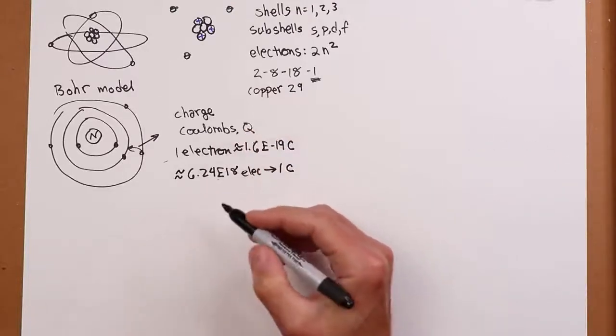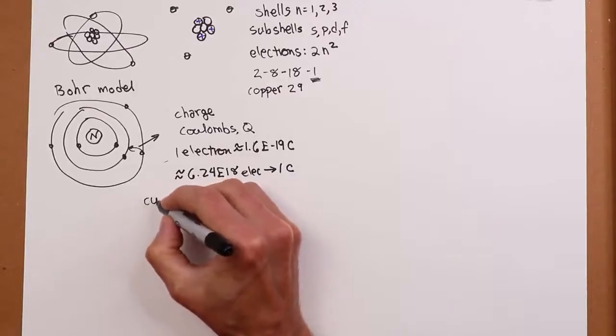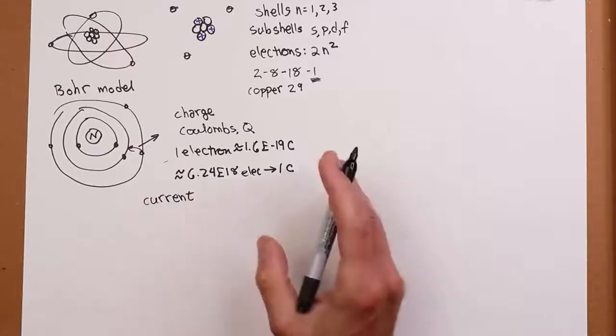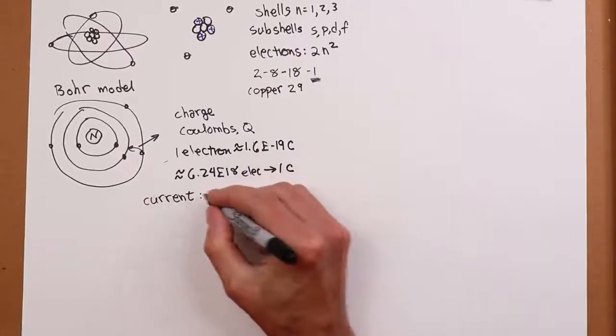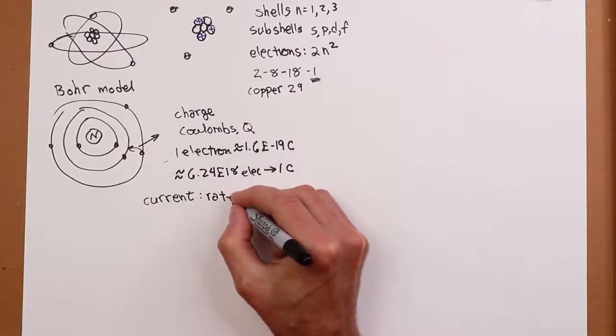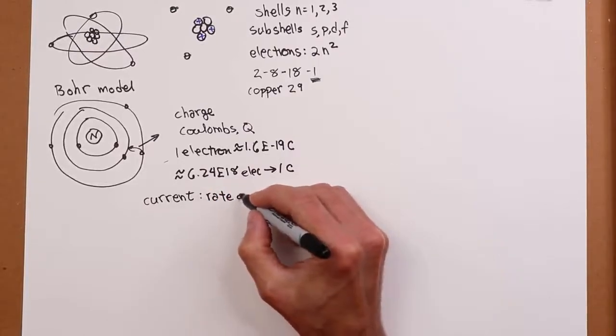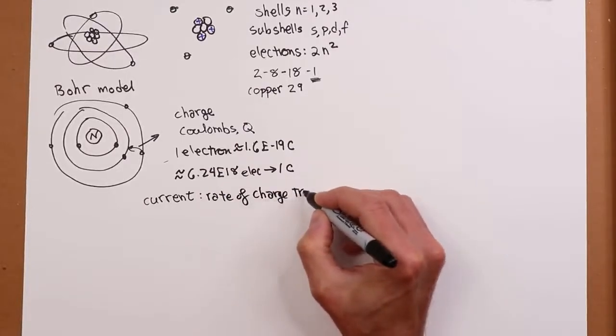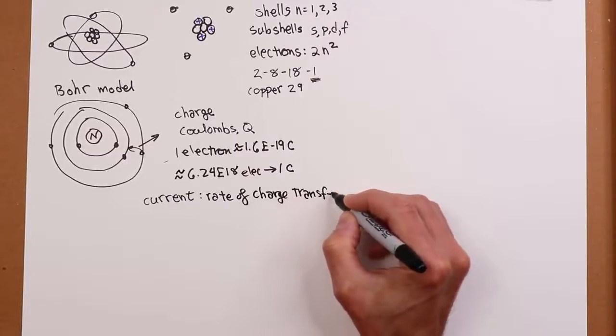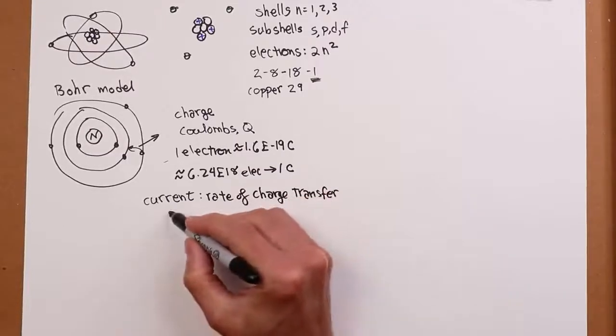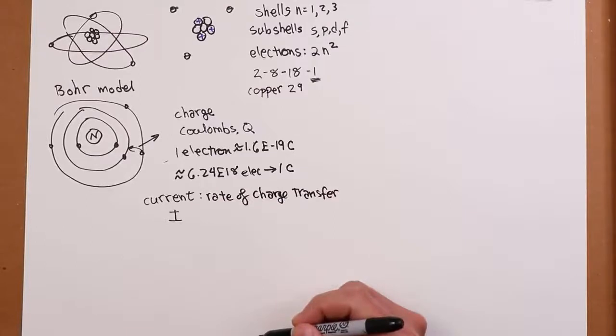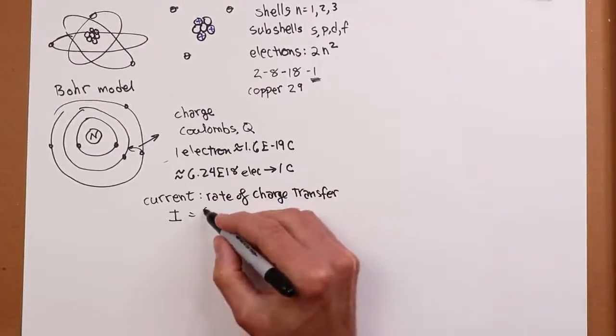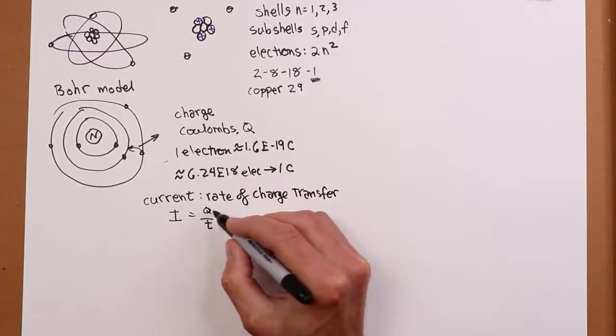It is, in fact, the movement of charge that tells us what current is. So we refer to that as the intensity, I. Current, electrical current, is nothing more than the rate of charge movement or charge transfer, however you want to think of that. So we use I for intensity. And the rate of charge transfer would be q over t, charge over time.